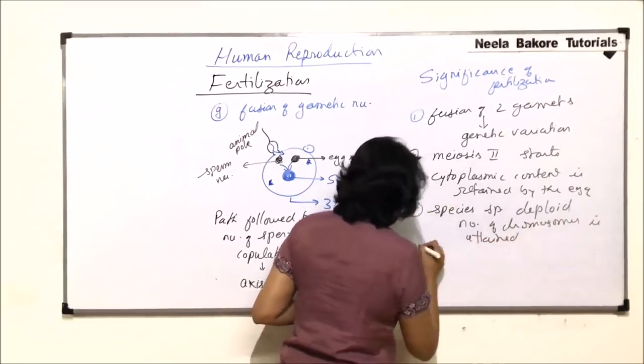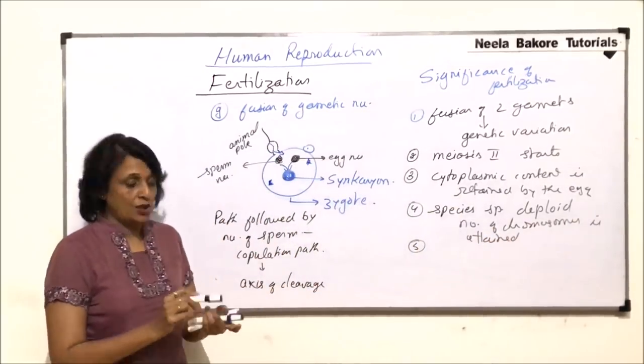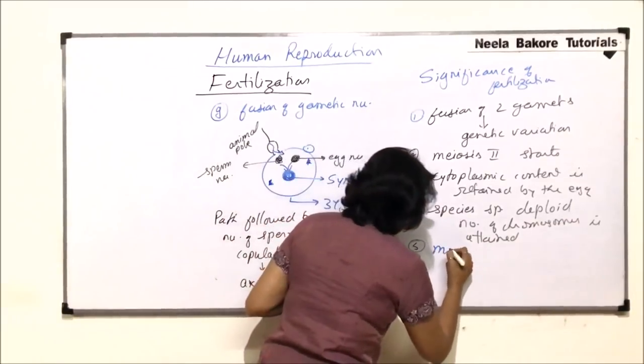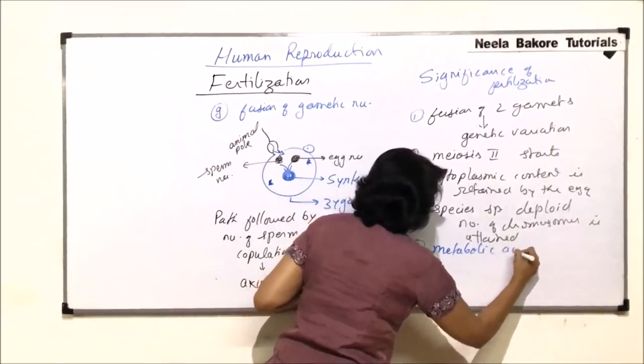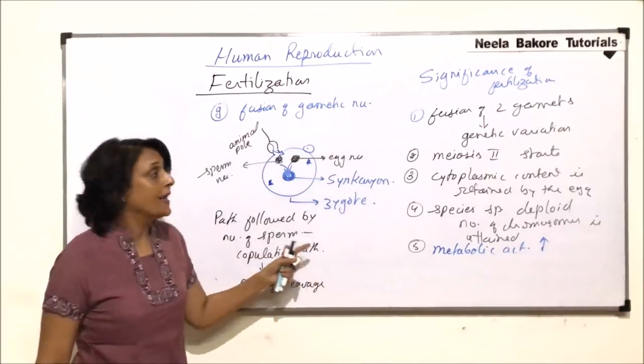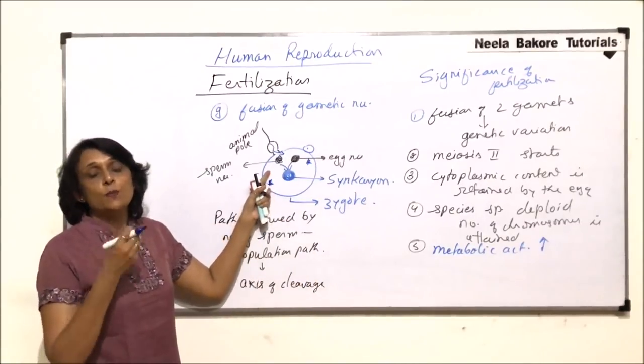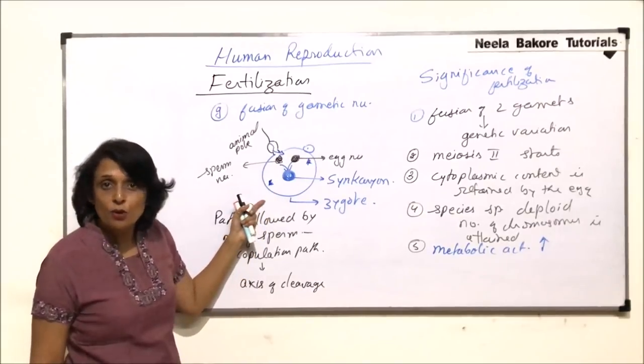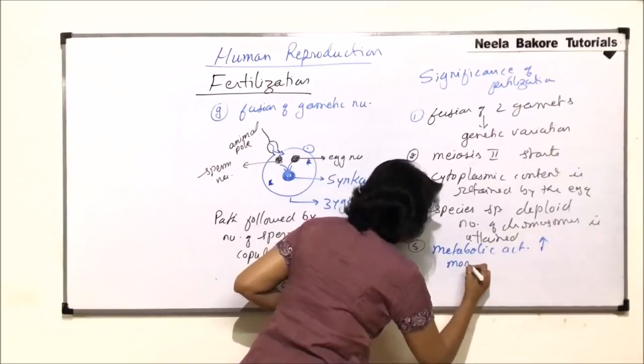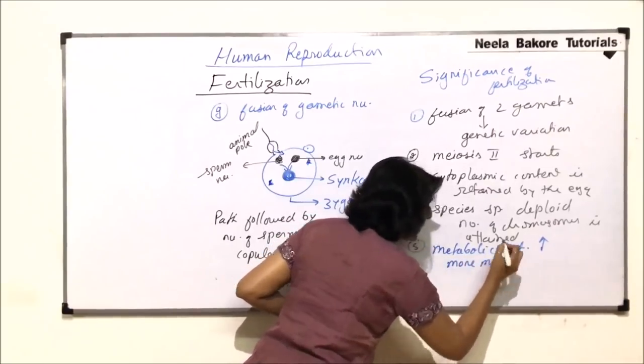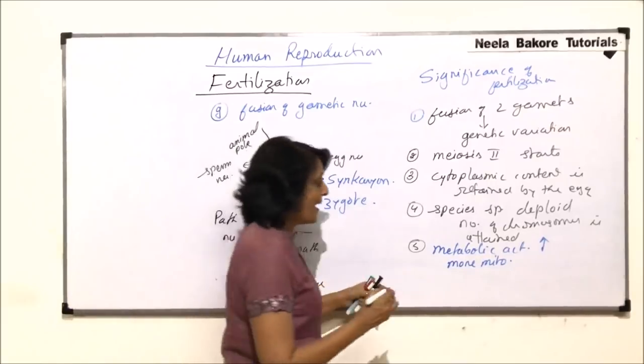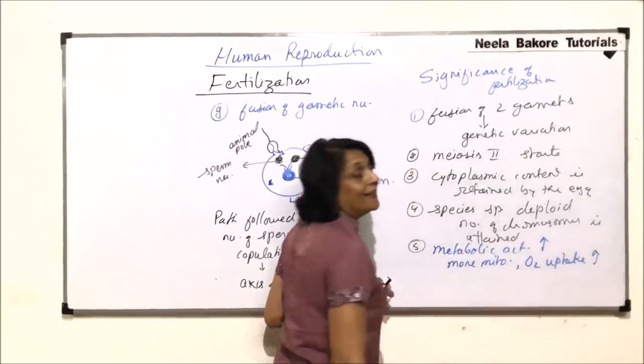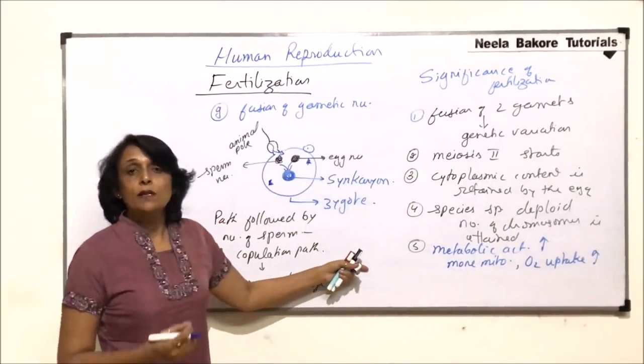One more change which is seen as fertilization takes place - metabolic activities also increase. And the reason is because when we say sperm enters, it is the nucleus which enters, mitochondria which enter, and centrioles also which enter. So here due to more mitochondria, the metabolic activities are high. Oxygen uptake also increases. Why all these things should happen? Because now the zygote is going to divide.